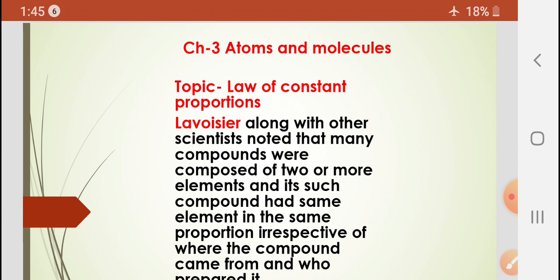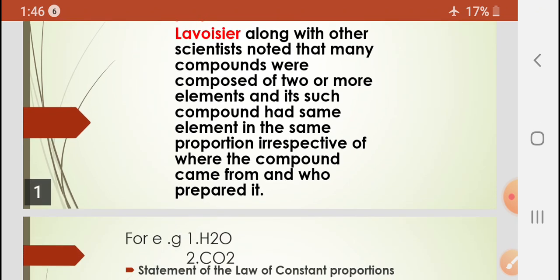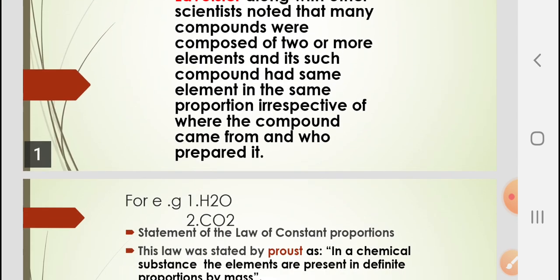According to the scientist Lavoisier, he noted that in a compound which is composed of two or more different types of elements, the types of elements present in that compound are always the same — whether that compound is taken from any source, whatever is its origin, and whatever is the method used to prepare it. To understand this, let us take an example.